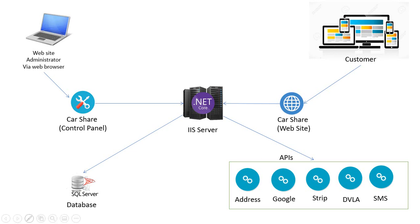We used Stripe as the payment gateway so customers can pay after they book. We also used several Google APIs — the main ones being Google Maps and Google Sign-in. We also used an address API where, in the UK, you can enter your postcode and house number and it will fill in all the address fields automatically. This is UK-specific but you can adapt it for your own country.